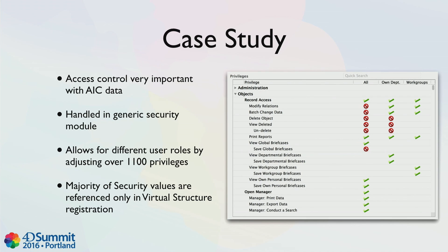At the museum, every single field has view and modify privileges, along with functionality throughout the application. Access control is very important for our data — it's a several-billion-dollar art collection and there are lots of buried secrets in there. The security module is all basically generic, and this interface allows for different user roles by adjusting over 1,100 privileges. How do you manage 1,100 privilege values? The virtual structure registration actually handles all that for you — you just set it when you set up the field, set it and forget it, and it's referenced automatically. That might have even been where the idea was born, frankly.